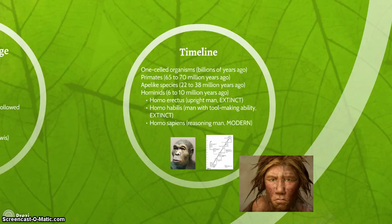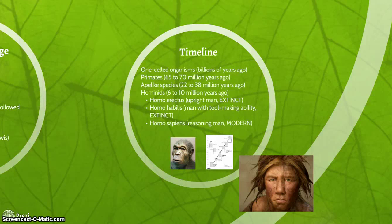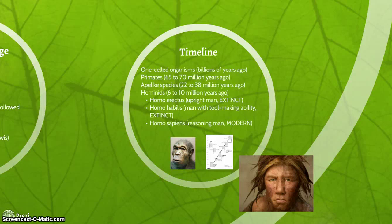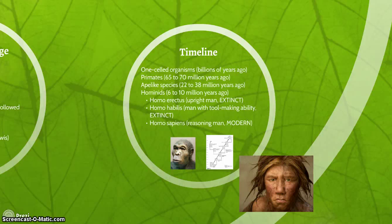The timeline: billions of years ago, one-celled organisms emerged. Only about 65 to 70 million years ago was the emergence of primates and apes. Ape-like species from within the primates developed 22 to 38 million years ago. Hominids, who were able to stand erect, emerged out of the apes 6 to 10 million years ago. Homo erectus was the first upright man, now extinct. Homo habilis were humans with the ability to make and use tools, also extinct. And Homo sapiens was the shorthand for reasoning man, which led to the development of modern man.